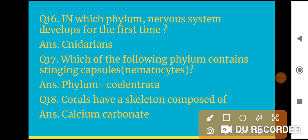Question 16: In which phylum does nervous system develop for the first time? Cnidarians is the correct answer. Question 17: Which of the following phylum contains stinging capsule, that is nematocytes? The example is phylum Coelenterata.